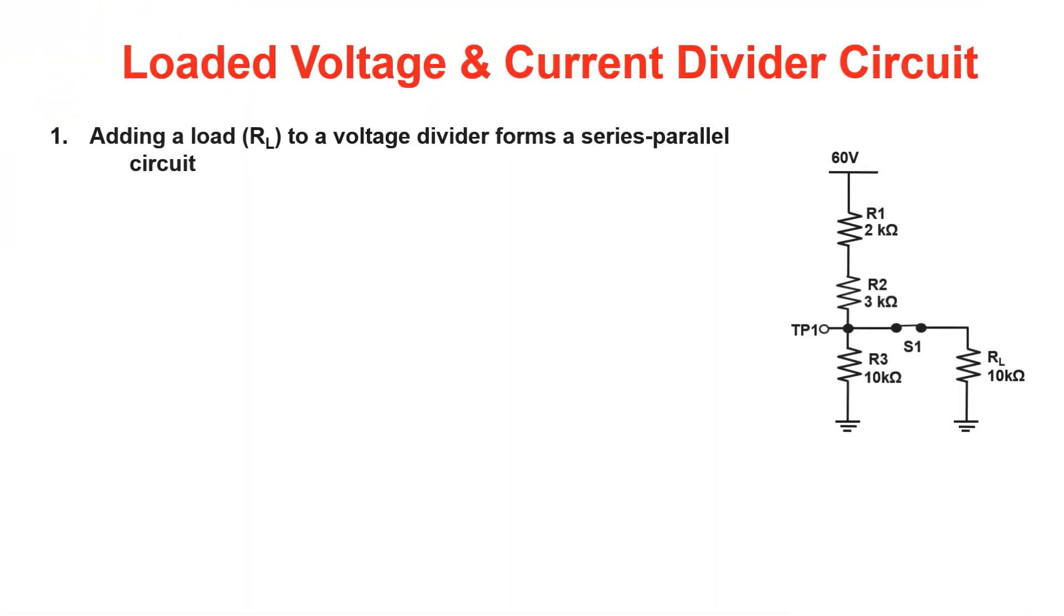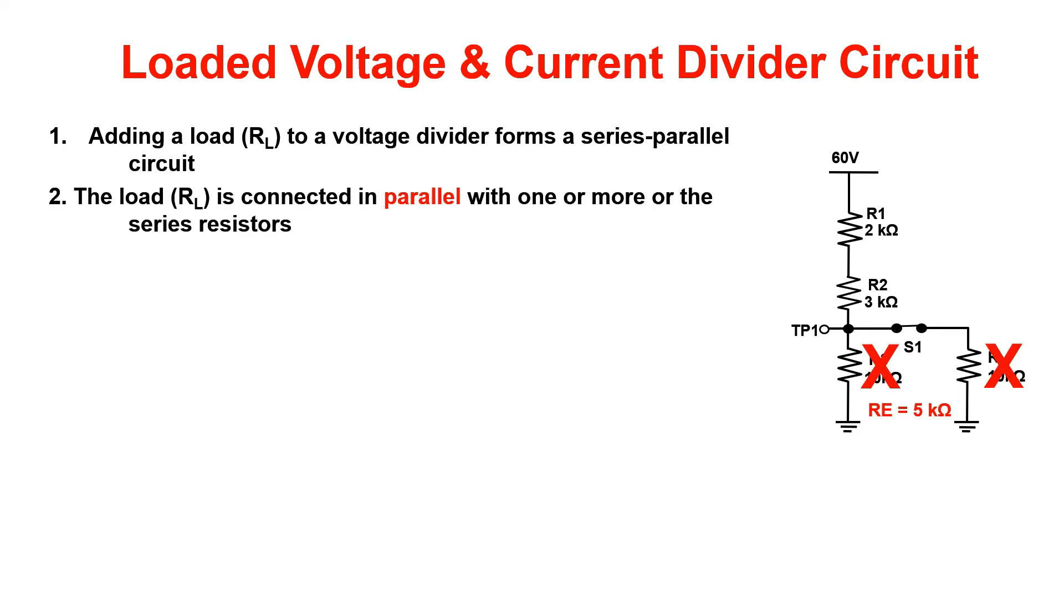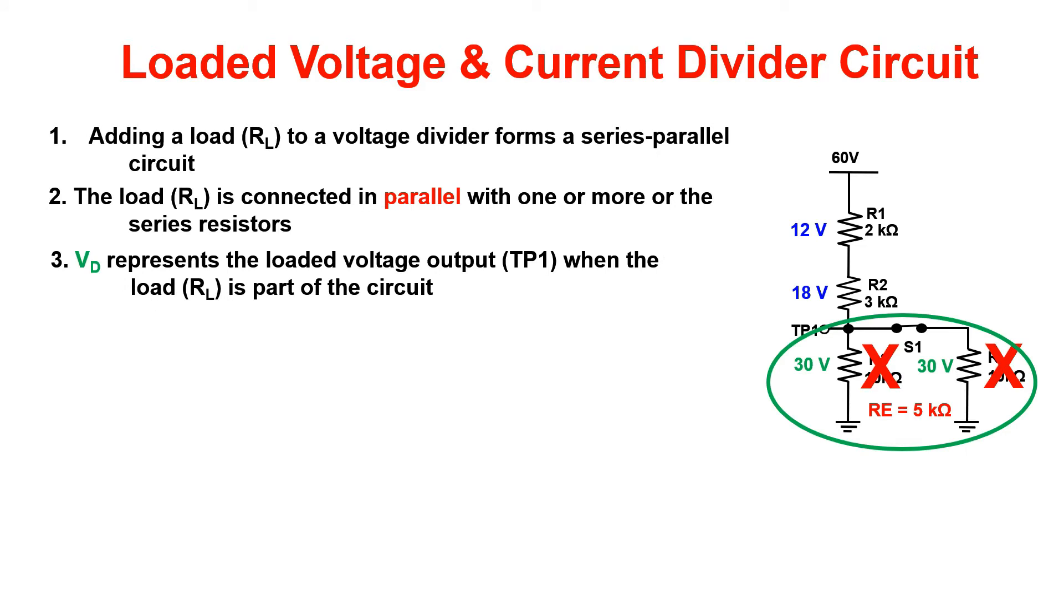When we load a voltage divider by closing the switch, the circuit becomes a series parallel circuit. The load is connected in parallel with one or more of the series resistors. VD represents the loaded voltage output seen at test point 1 when the load, or RL, is part of the circuit. When a load is added to a voltage divider circuit, current flowing through the circuit will increase, the resistance will decrease, and the voltage output will decrease.